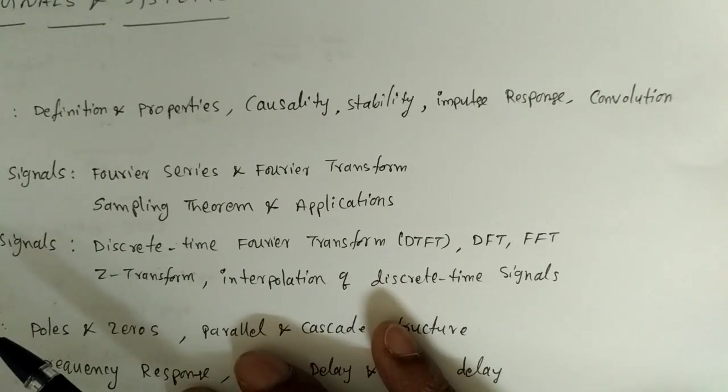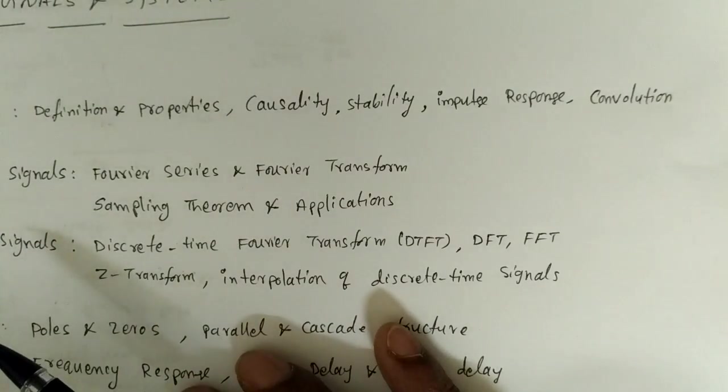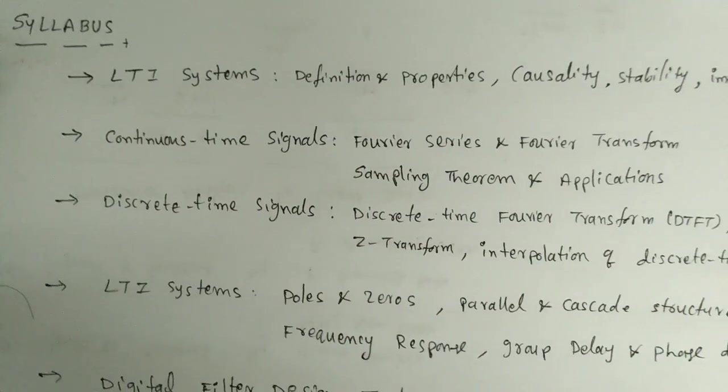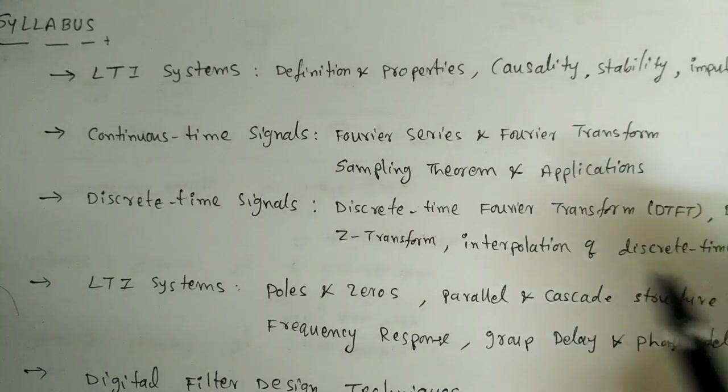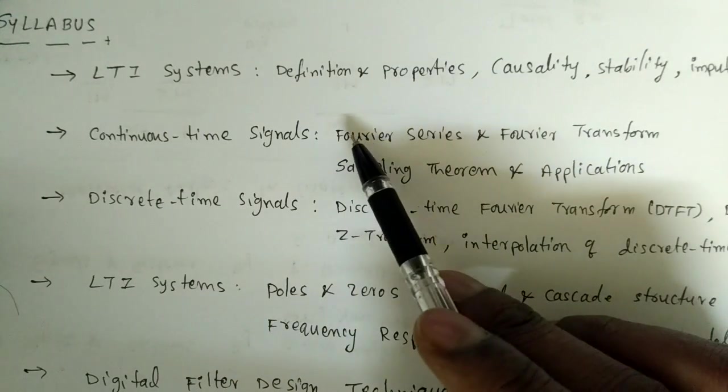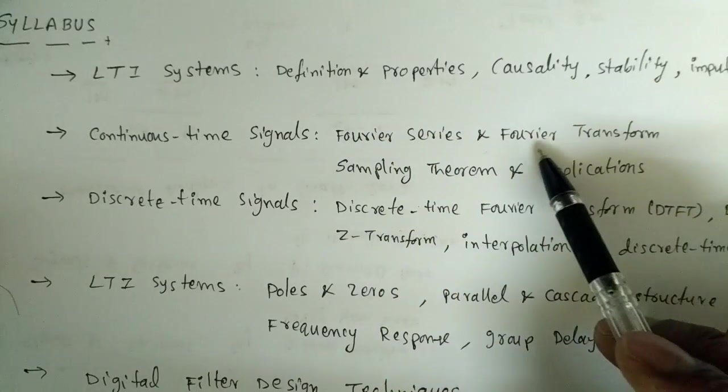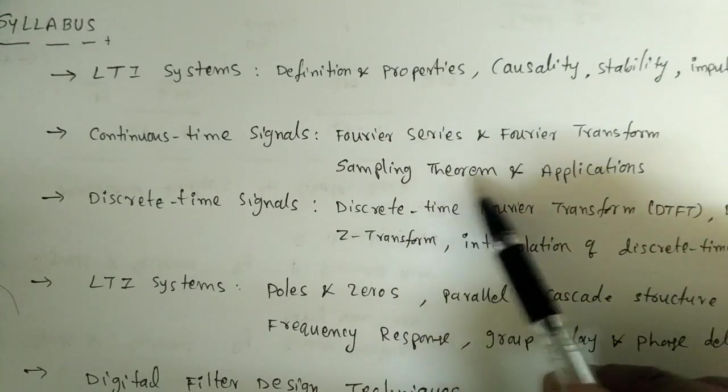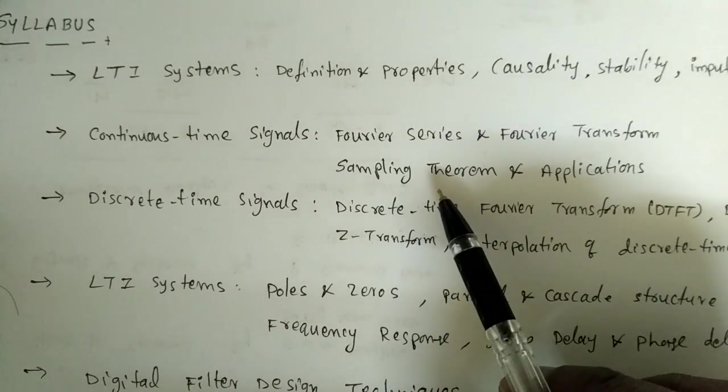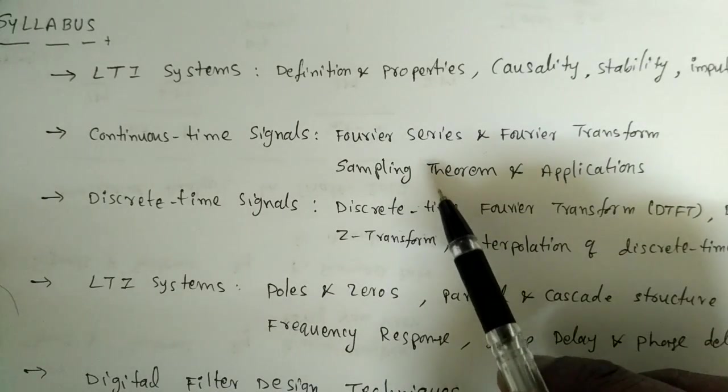Next one is continuous time signals: Fourier series and Fourier transform - continuous time Fourier series, continuous time Fourier transform, sampling theorem and its applications. Using this sampling theorem we will get at least one question from each GATE exam.